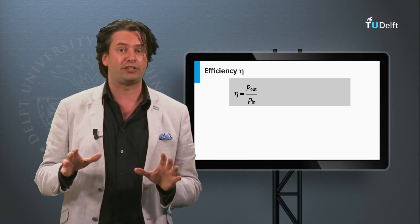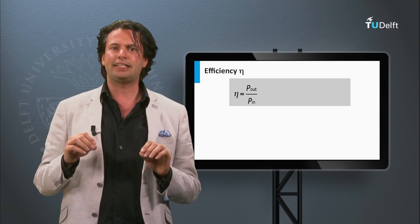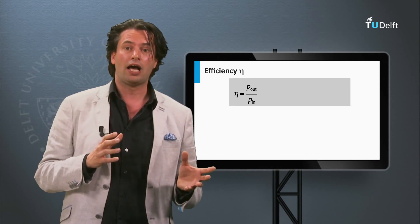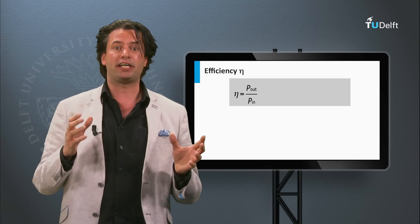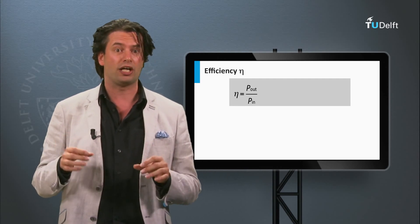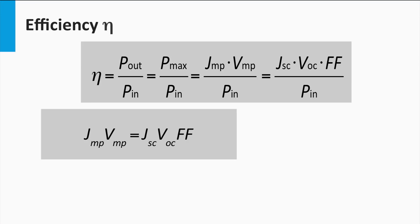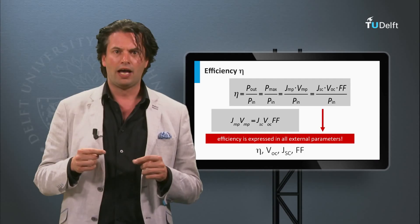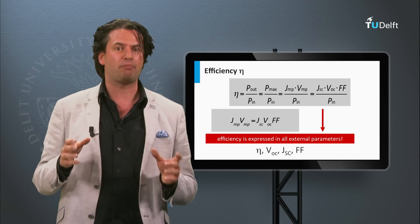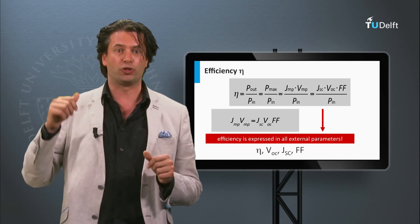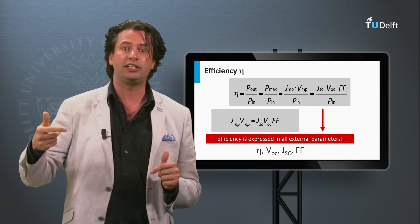Now we introduce the conversion efficiency eta of a solar cell. This is the ratio between the power density coming out of the solar cell, P out, and the light power density incident on the solar cell, P in. Conversion efficiency is defined at the maximum power point, so P out equals P max, which equals Jmp times Vmp. This product equals the product of the short circuit current density, the open circuit voltage, and the fill factor. As a result, the conversion efficiency can be expressed in terms of the external parameters: the open circuit voltage, the short circuit current density, and the fill factor.